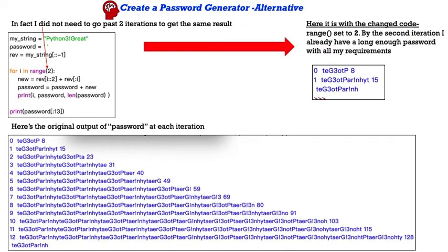I'm always trying to find ways to do things more efficiently. So here's an alternative. I did not need to go past two iterations to get the same result that we did in the previous slide. So here is the code with a slight change. I have my range set to 2. By the second iteration, I already have a long enough password with all my requirements. Look down here at the bottom. This is the original output. If I put print statements in to be able to show us for iteration 0, I have 8 characters, and then iteration 1, I have 15. By that second 1, I already have enough characters. So if I just change this, I can make my code much more efficient and get the exact same result.